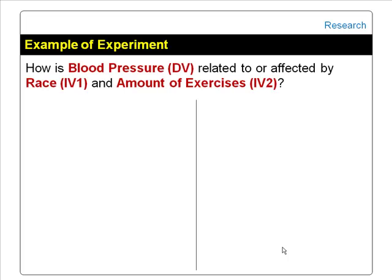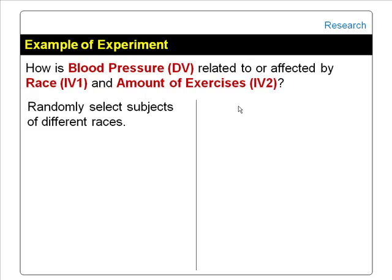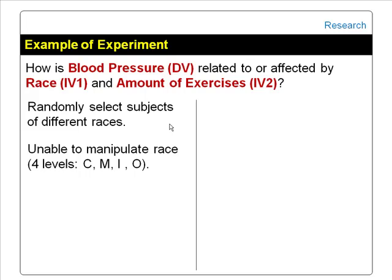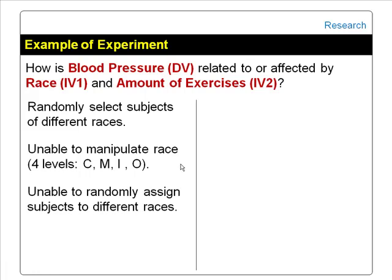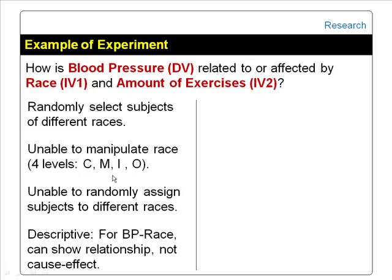Using the earlier example, blood pressure is the dependent variable and the two independent variables are race and amount of exercises. To do the experiment, we randomly select subjects of different races. However, we are unable to manipulate race because it is fixed. In the Singapore context, we have four races: Chinese, Malay, Indian, and others. We cannot randomly assign subjects to different races because a Chinese person belongs to the Chinese group and a Malay to the Malay group. So for blood pressure and race, we can only show relationship or association, not cause and effect. This is a descriptive study.